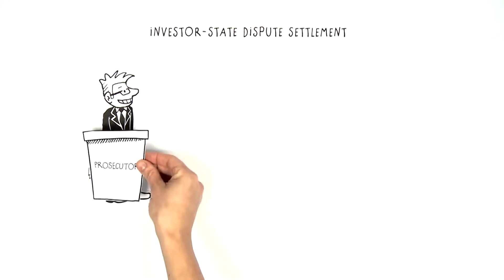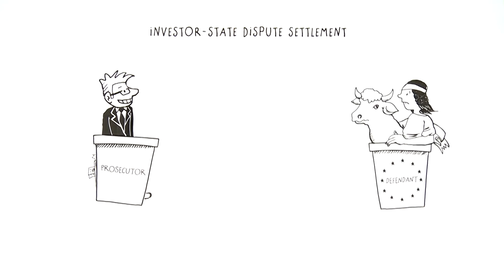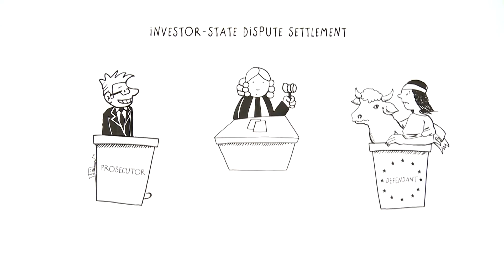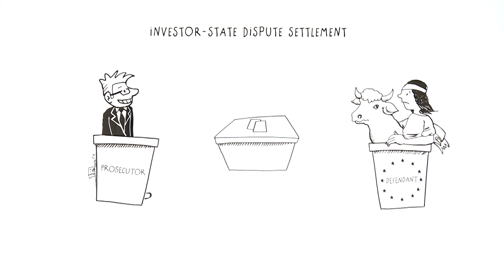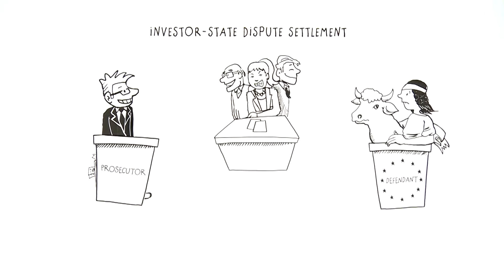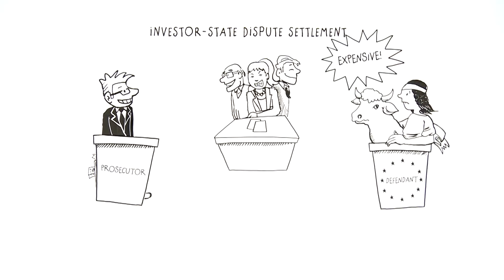ISDS allows investors to take legal action against government measures at private arbitration tribunals. Here, it is not independent judges making the decisions, but lawyers with close ties to business. This exclusive power of proceedings could cost us and our democracy very dearly.